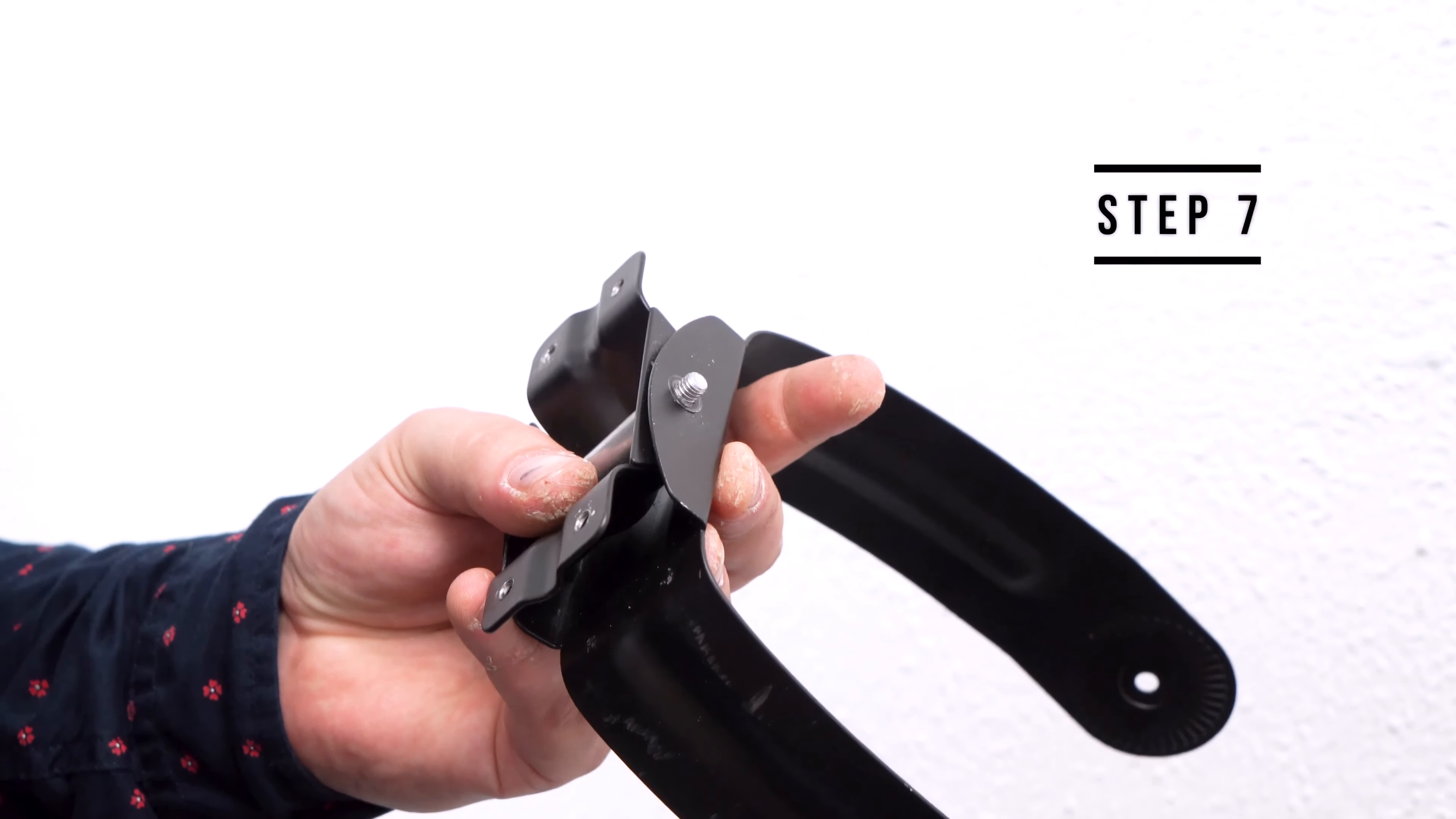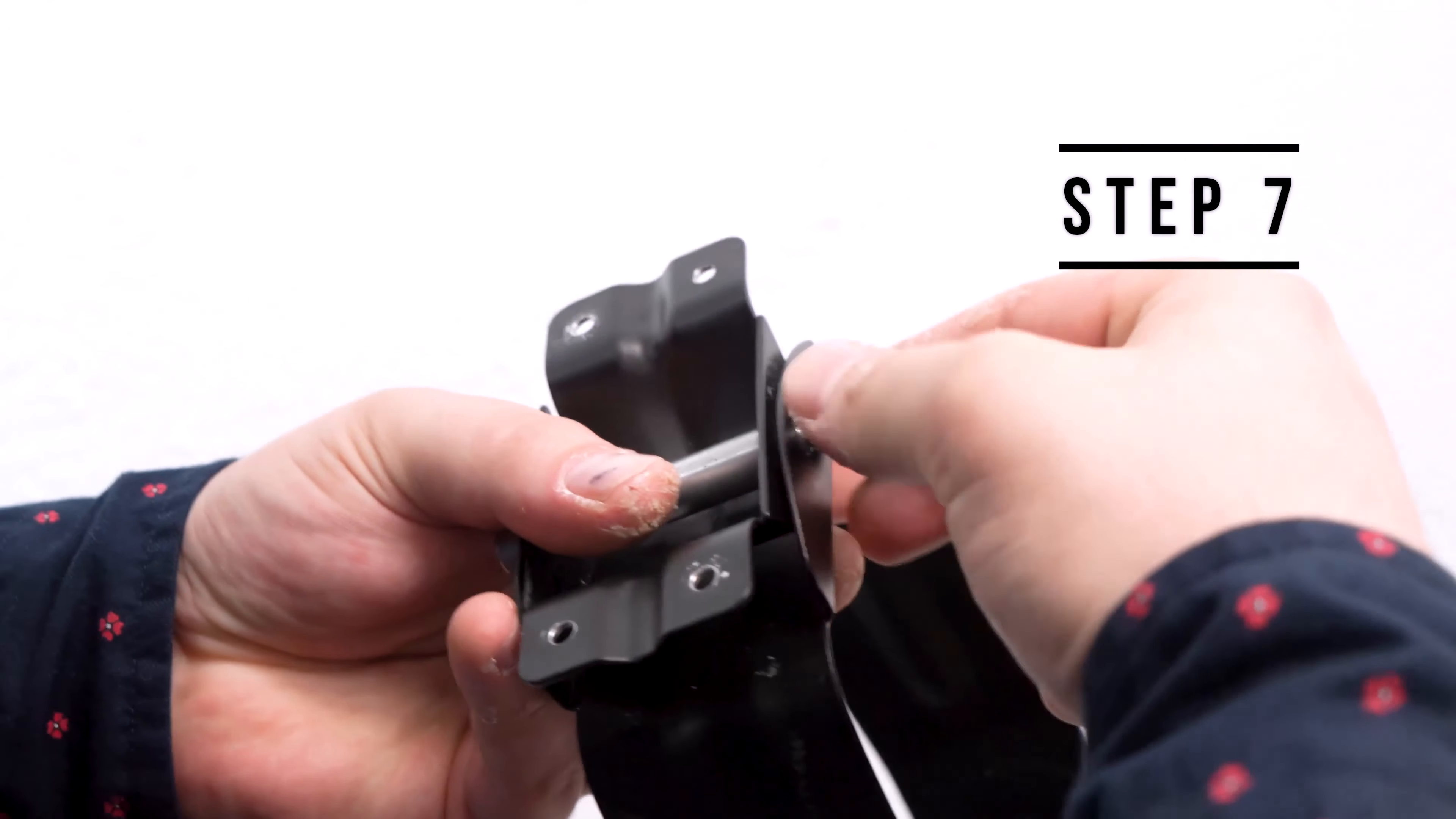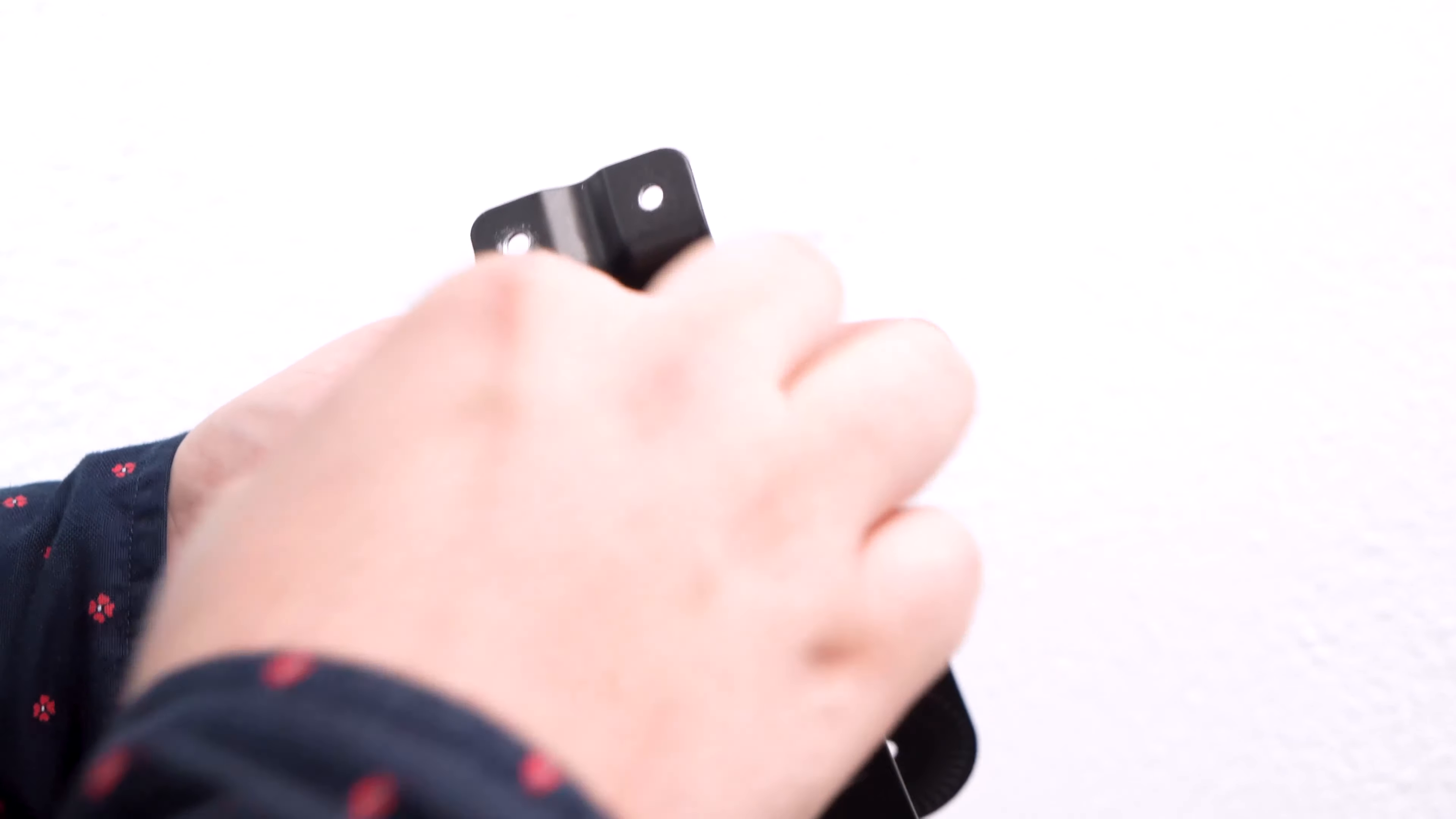For step number seven we are going to put this nut at the end of the hex bolt right here and I'm going to make sure that it stays loose. I don't want to over-tighten it too much because I will need it for future adjustments.